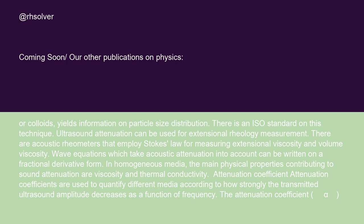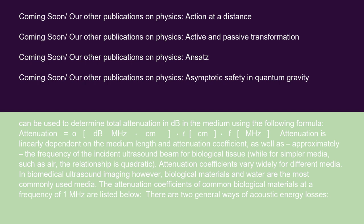Attenuation coefficients are used to quantify different media according to how strongly the transmitted ultrasound amplitude decreases as a function of frequency. The attenuation coefficient alpha can be used to determine total attenuation in dB using the formula: Attenuation = alpha (dB/MHz/cm) × cm × MHz. Attenuation is linearly dependent on the medium length and attenuation coefficient, and approximately on the frequency of the incident ultrasound beam for biological tissue, while for simpler media such as air, the relationship is quadratic.